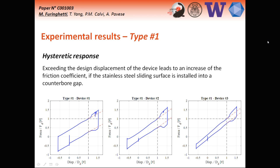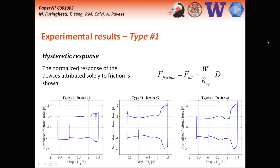These are the results for type one devices, showing the hysteretic responses for all the devices. Type one is the same device equipped with different sliding materials. We can notice that the overall response as the design displacement is overcome remains approximately with the same recentering contribution. The only effect is an increase in the friction coefficient, and this behavior can be captured by considering the actual friction coefficient force, computed by subtracting the recentering force from the total device force.